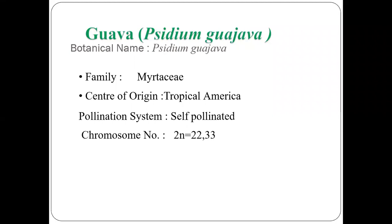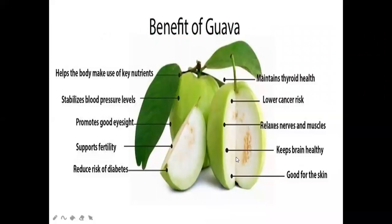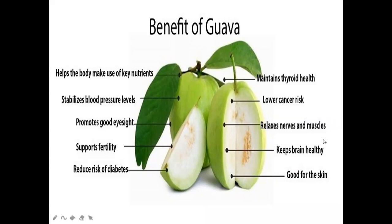There are two types of guava: diploid and triploid. Diploid guavas are seeded varieties and triploids are seedless varieties. Guava has numerous benefits: it maintains thyroid health, lowers cancer risk, relaxes nerves and muscles, keeps the brain healthy, is good for skin, reduces diabetes risk, promotes fertility and good eyesight, stabilizes blood pressure, and helps the body utilize key nutrients. It is a rich source of vitamin C.